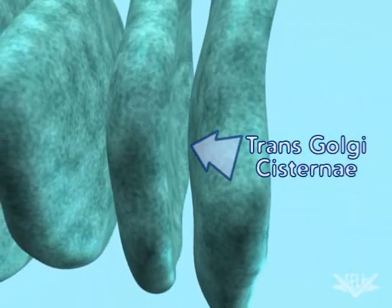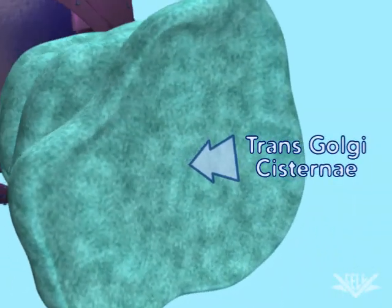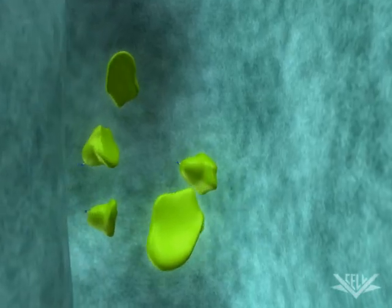Once the hydrolase reaches the trans-Golgi cisternae, the mannose-6-phosphate signal has been completed. Only proteins destined for the endosome have the mannose-6-phosphate signal.